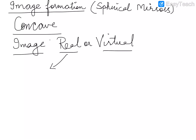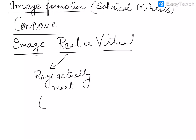A real image is obtained when the rays actually meet. When the rays actually meet, you can obtain the image on the screen — real image can be obtained on the screen because in this case rays actually meet at a point and image formation happens there. Whereas in case of virtual image, the rays do not meet at a point.